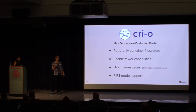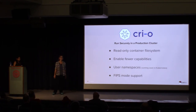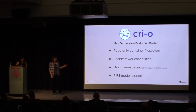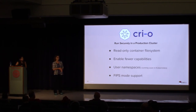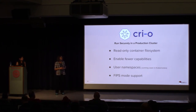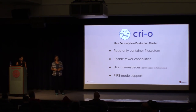If anybody here works for the federal government, you might be interested in knowing about CRI-O as your only option for running things in FIPS-compliant mode. FIPS is a list of encryption algorithms that are permitted to be used, and the federal government pretty much makes their employees run their systems in FIPS mode. CRI-O is the only container runtime that knows what that is and can carry that information into the containers and enforce it.